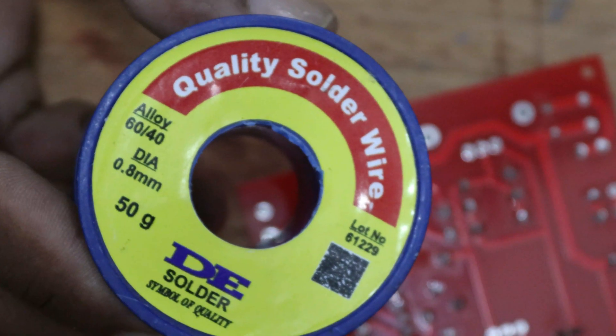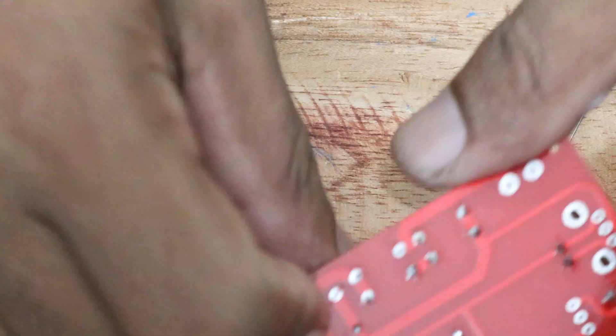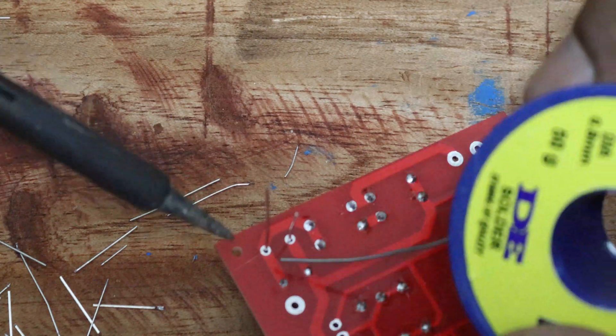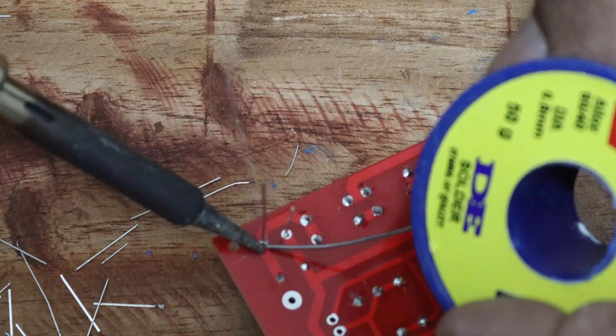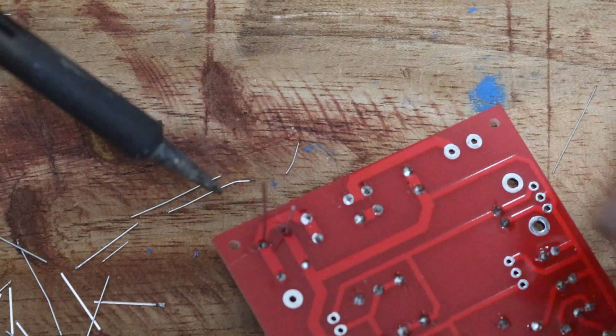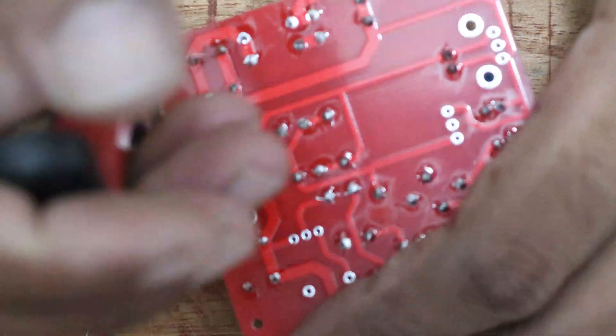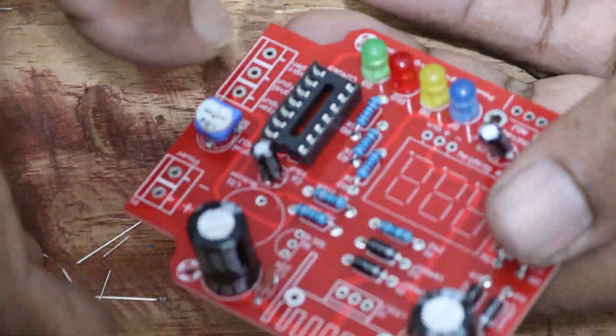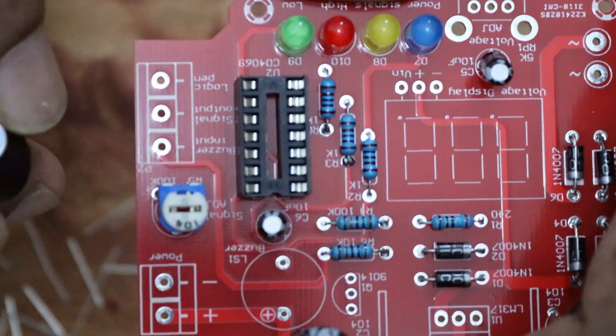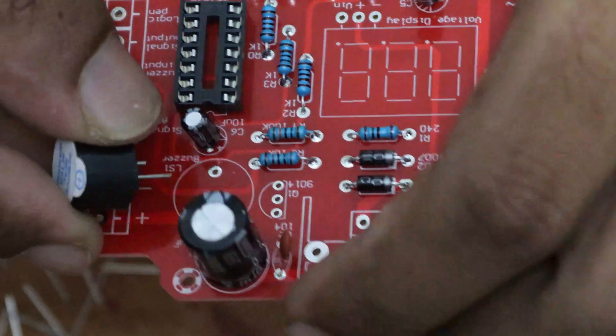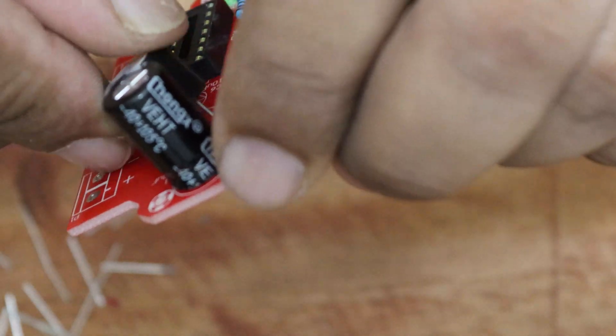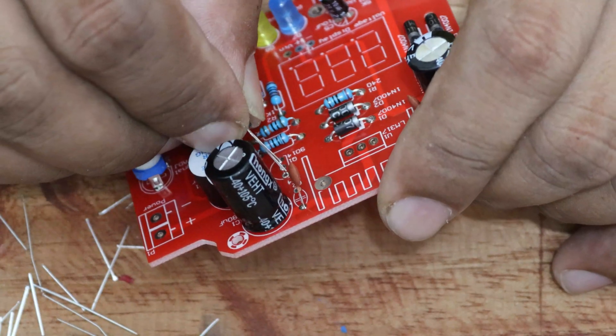I am using 0.08mm solder wires. This buzzer also has positive and negative pins, so solder in the correct direction. Do not overheat the pins of this transistor during soldering.